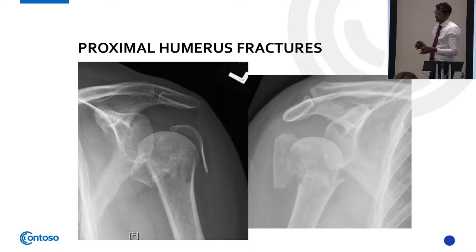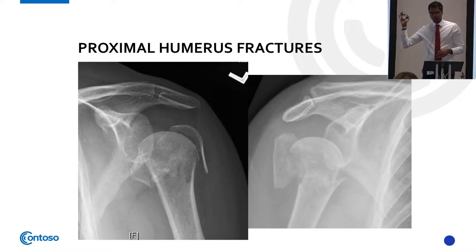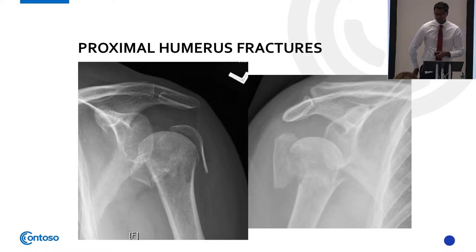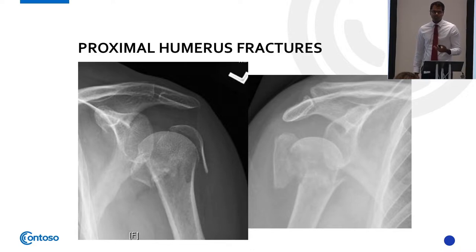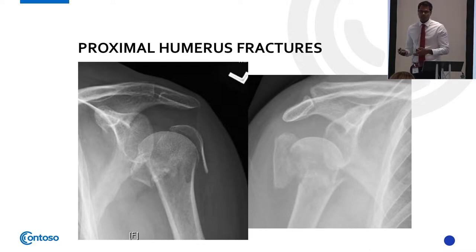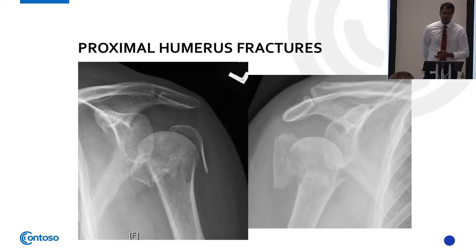An anterior dislocation is usually due to an abduction external rotation injury — someone falling or receiving a hard force in that position pushes the humeral head forward. A posterior dislocation is the other way: an internally rotated arm, and this usually occurs in someone with epilepsy or following electrocution, because the internal rotators — particularly latissimus dorsi — are stronger than the external rotators and overpower them.